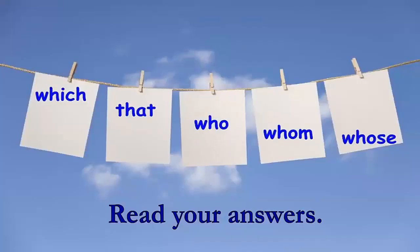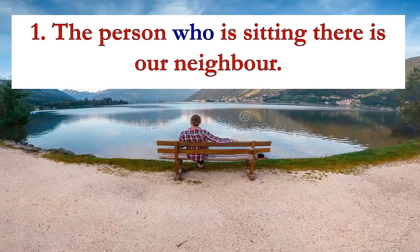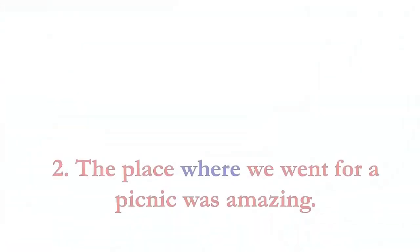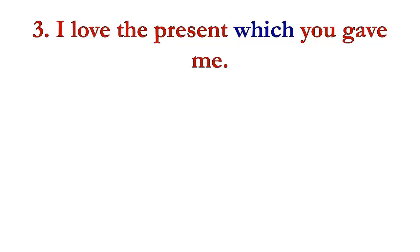Let's read your answers. Number one: the person who is sitting there is our neighbor — we are talking about a person so we use 'who.' Number two: the place where we went for a picnic was amazing — we talked about a place so we use 'where.' Number three: I love the present which you gave me — we used 'which' because we are talking about a thing.